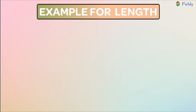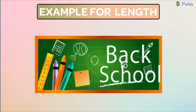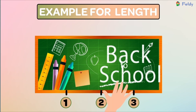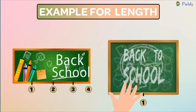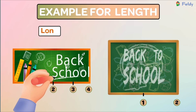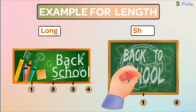Let's see an example for length. This is a bird. Using hand span, measure it. One, two, three, four. Let's do another board. One, two. Now, which is long and short? This board is long. This board is short.